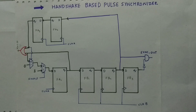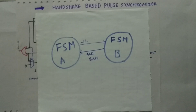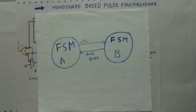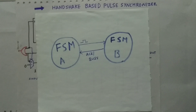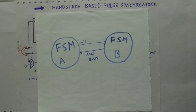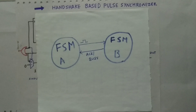Let us first discuss where a handshake based pulse synchronizer is used. Consider two state machines FSM-A and FSM-B. FSM-A updates FSM-B through a pulse signal — whenever FSM-A wants to update, it sends a pulse signal to FSM-B, which gets synchronized through the pulse synchronizer. But if FSM-A sends more than one pulse or back-to-back pulses, the pulse synchronizer cannot handle them, and we get wrong values at FSM-B.